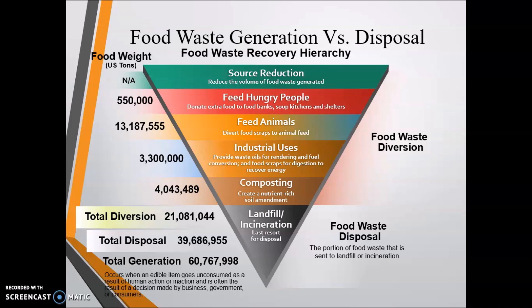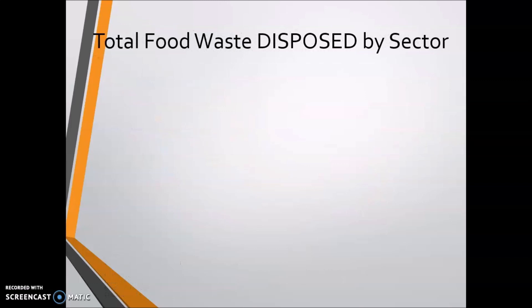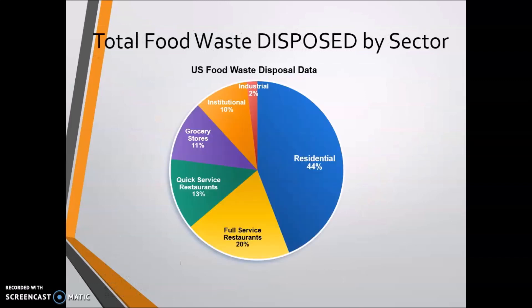The food waste hierarchy and recovery hierarchy system. US food waste disposal data by sector: residential is 40%, full-service restaurants 20%, peak services restaurants 30%, grocery stores 11%, institutional 10%, and industrial 2%.